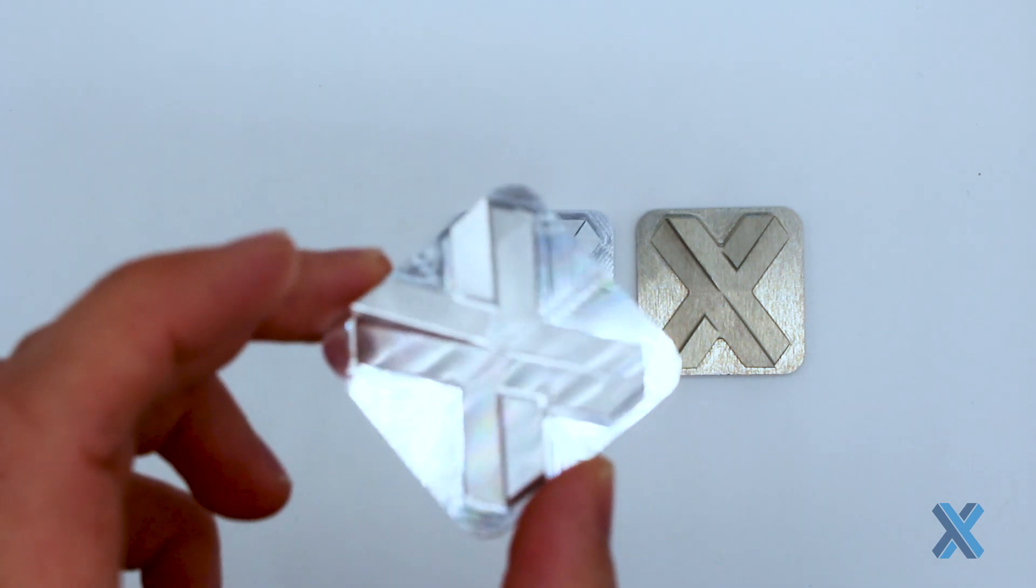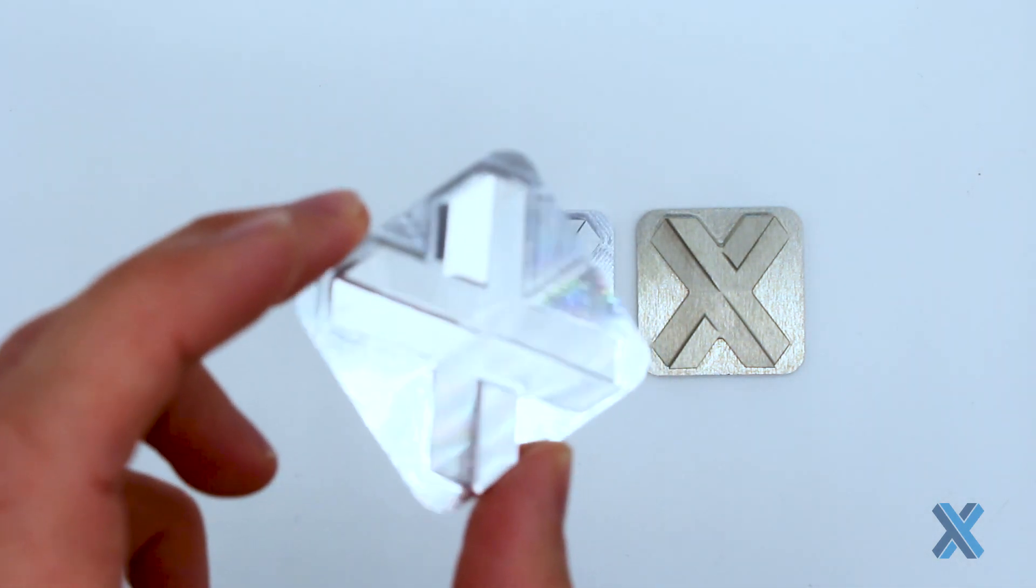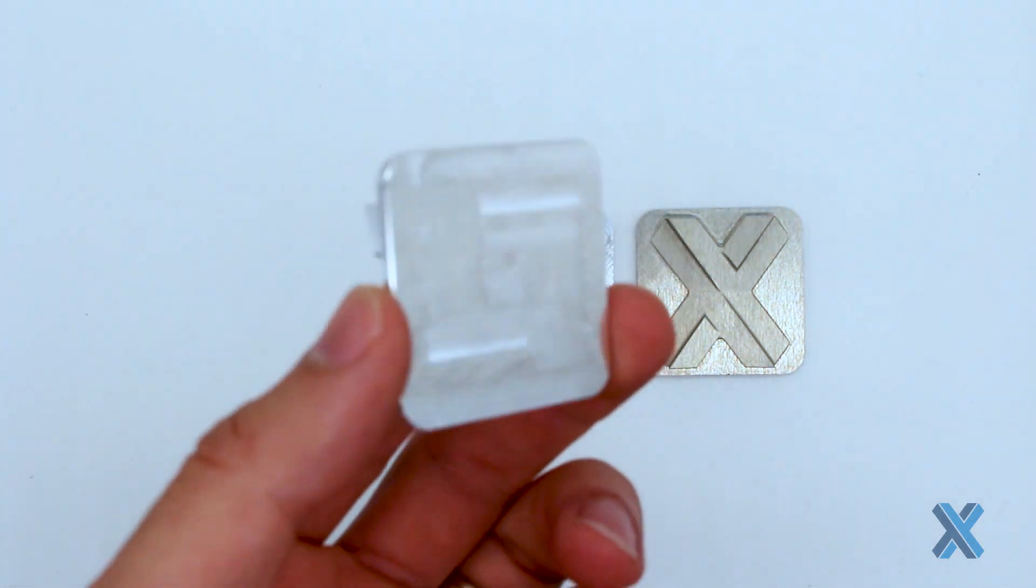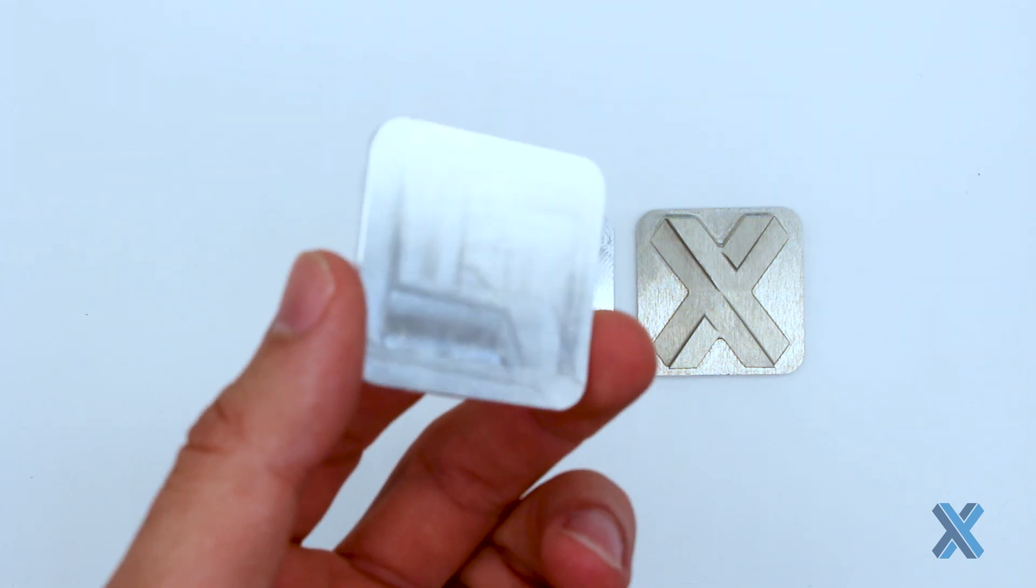Note that this is raw aluminum—it can have some oxidation over time, but overall that is a standard as-machined finish to a part. You can see a little bit more of that tool pathing on the backside.